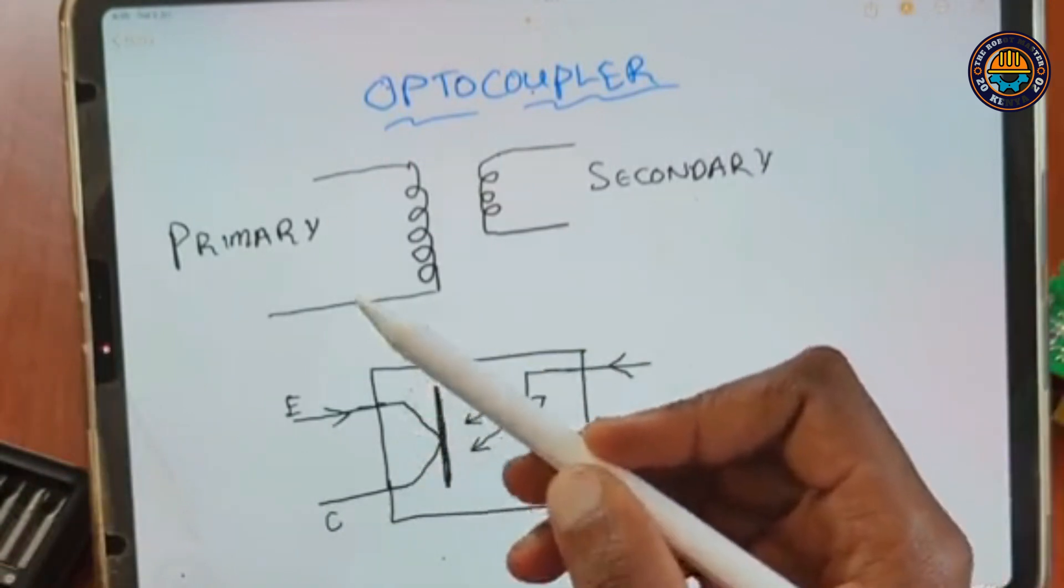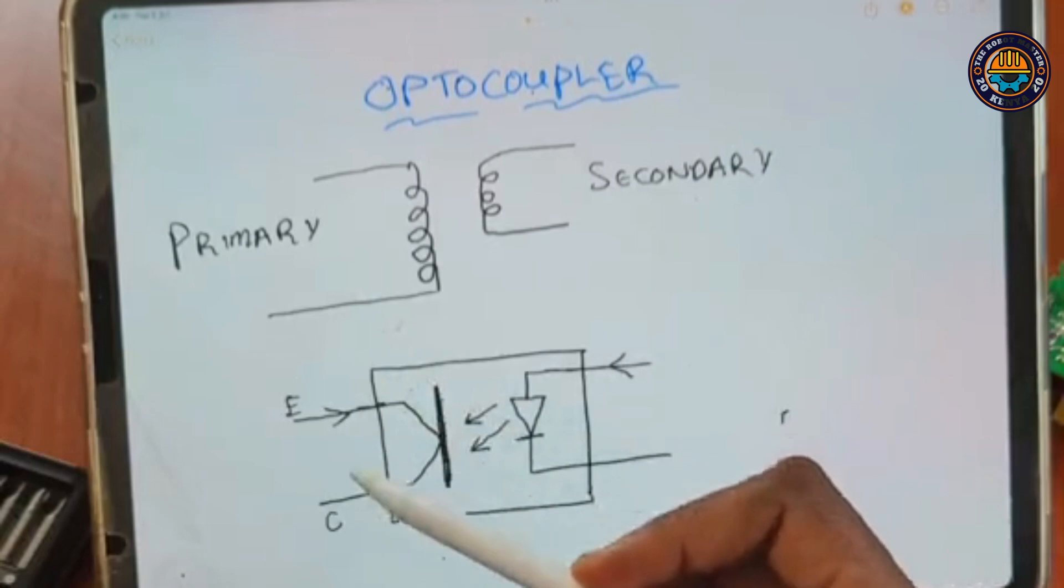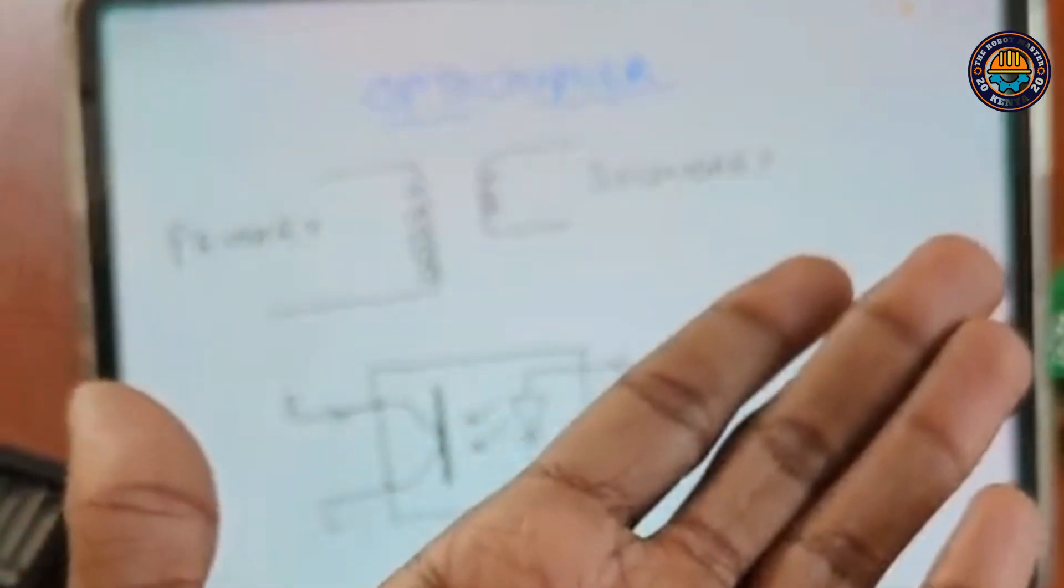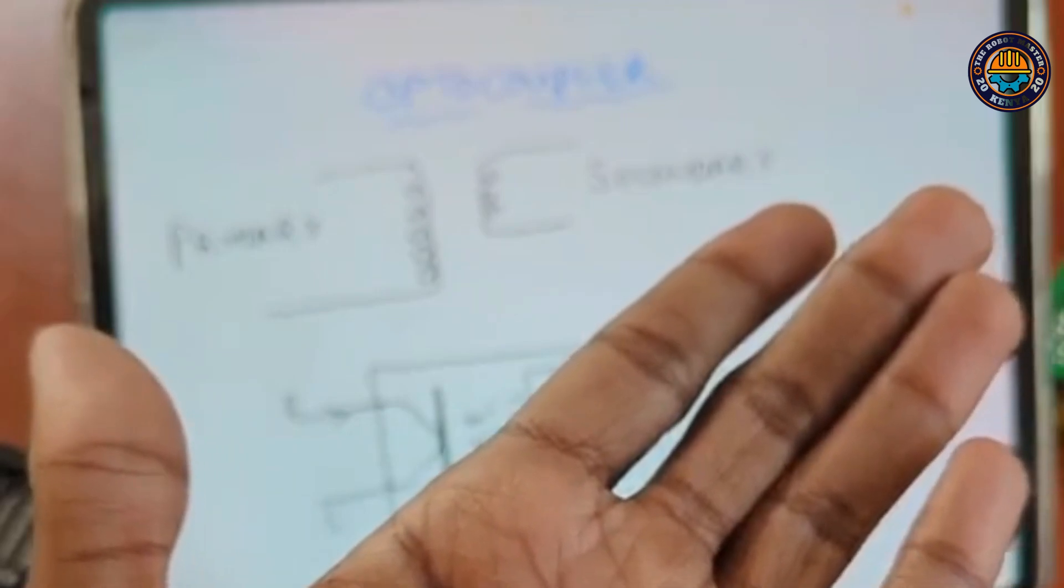And a transistor that is connected on the primary. So this transistor is like a normal transistor where you have the emitter, the collector, and the base. So the transistor is just like a switch.